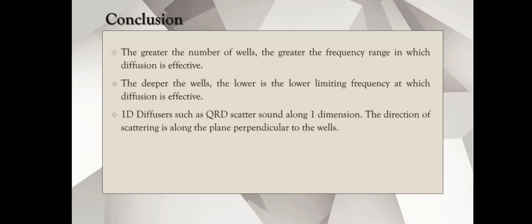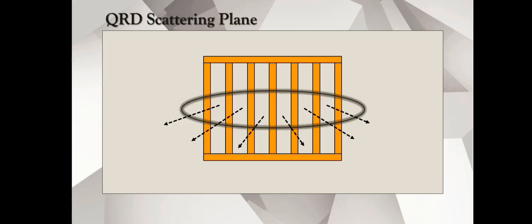To conclude, the greater the number of wells in the diffuser, the greater the frequency range in which the diffuser is effective. The deeper the wells, the lower the lowest frequency that can be diffused. And 1D diffuser, such as this QRD, scatters along one dimension, and the direction of scatter is always perpendicular to the plane in which they're installed. For example, if a diffuser is installed like this, the direction of scattering is going to be perpendicular to the direction in which it's installed.